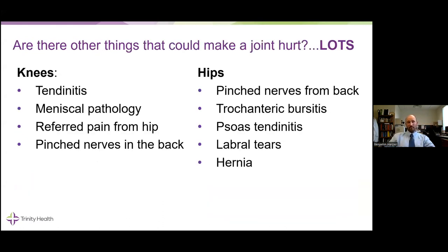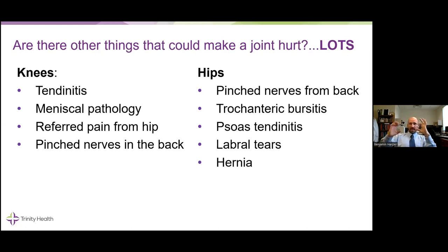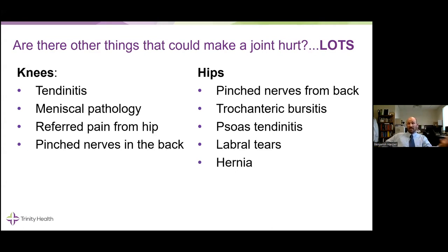If you're sitting at home with knee or hip pain, there are other things that can cause that pain. For knees, you can have different tendonitis conditions — the most common are patellar tendonitis, hamstring tendonitis, and the iliotibial band on the outside of the leg. There's a meniscus inside the knee, a C-shaped cartilage, one on the inside and one on the outside, that can have tearing or other problems. You can have referred pain from the hip, usually coming from the groin down the inside of the leg. You can also have pinched nerves in the back — commonly called sciatica — causing pain down the leg in various patterns.